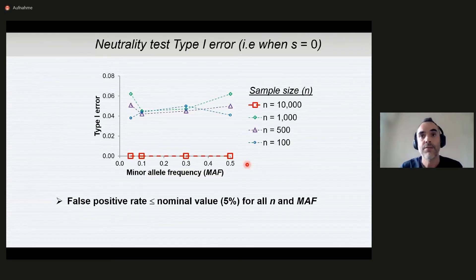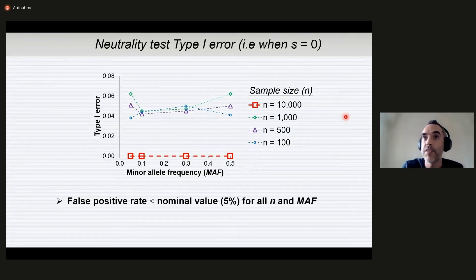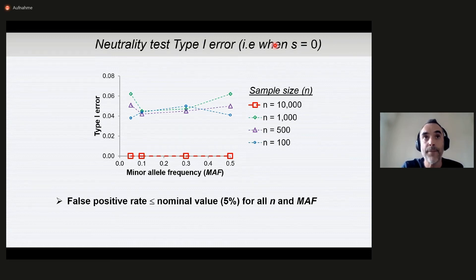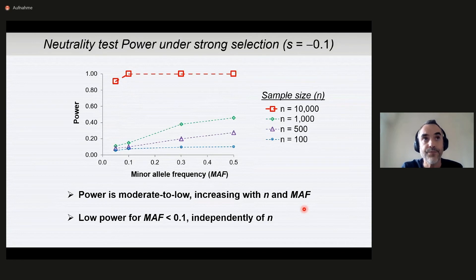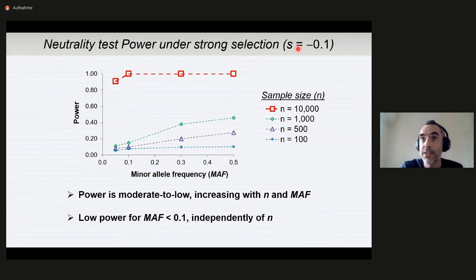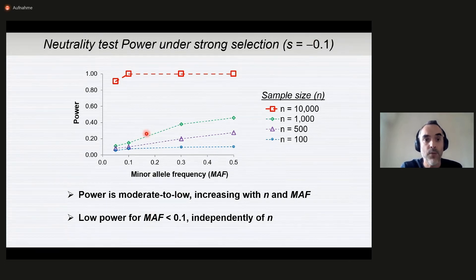As for the results of the neutrality tests, assuming there is no selection, we want to know what is the false positive rate. The neutrality test works quite well because the false positive rate is about the same as the nominal value of 5%, and this is independent of the sample size and the minor allele frequency. If there is selection, in this case we are looking at strong selection, what is the power of the method? What is the probability of considering a loci under selection when it actually is under strong selection?